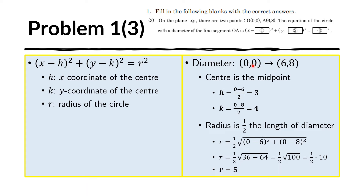The midpoint is simply the average. For the x-coordinate of the midpoint — that is our h — we get the average of 0 and 6: 0 plus 6 over 2 is 3. Therefore h equals 3. For the y-coordinate of the center, k, we get the average of 0 and 8: 0 plus 8 over 2 equals 4. Therefore k equals 4.